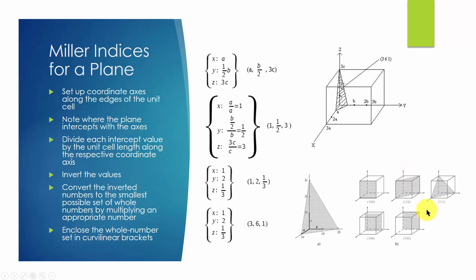Second, if the plane intercepts an axis in the negative portion, the minus sign is placed on top of the corresponding number, such as this plane.